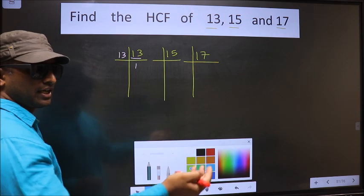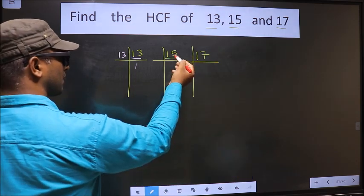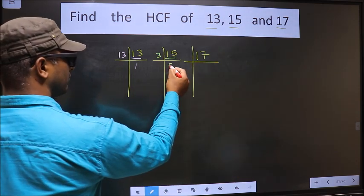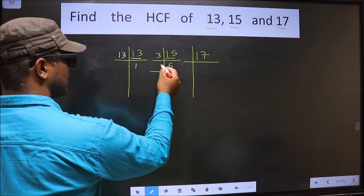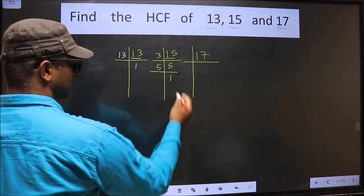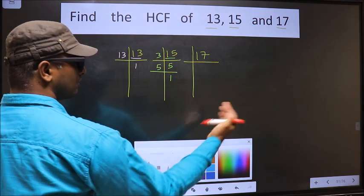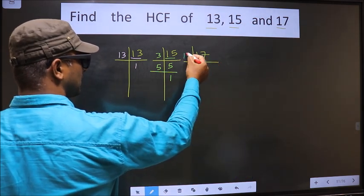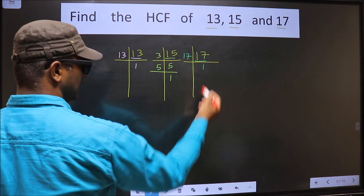Now the other number is 15. 15 is 3 times 5. Now we have 5. 5 is a prime number, so 5 once, 5. Now the other number is 17. 17 is a prime number, so 17 once, 17.